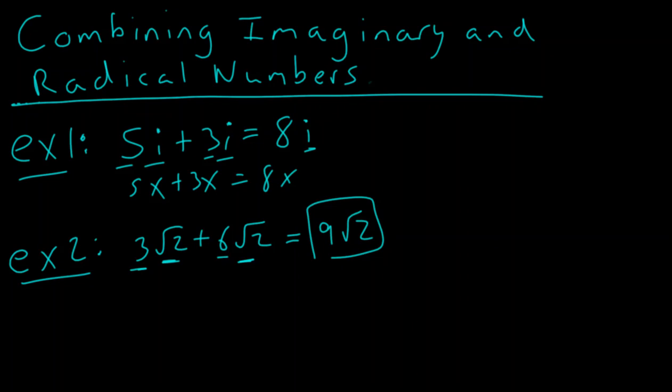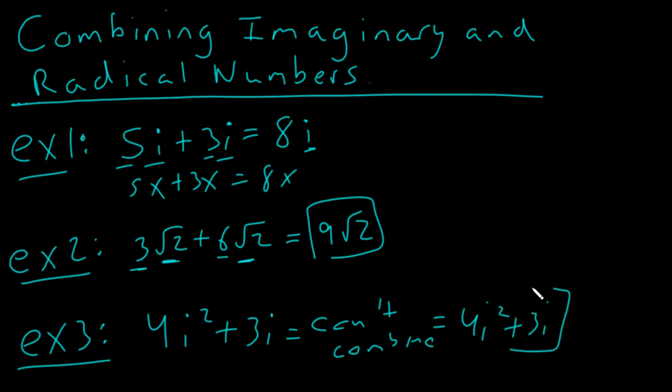Now, I think it's always helpful to see some examples that don't work out. So let's take a look at example number 3. What if I did 4i squared plus 3i? Well, you would say, you know what, they can't combine. So if they can't combine, 4i squared plus 3i is simply 4i squared plus 3i. They have to remain separate because they're not like terms.